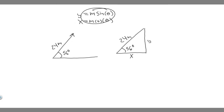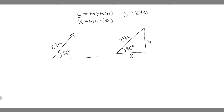So if we go ahead and solve — I'll show you in a second why it works — y is equal to the magnitude, which is 24, times the sine of the angle. The angle is 56 degrees, so 24 times the sine of 56. Make sure when you do this it's in degrees. So that gives us 19.89 — that's going to be the y component.